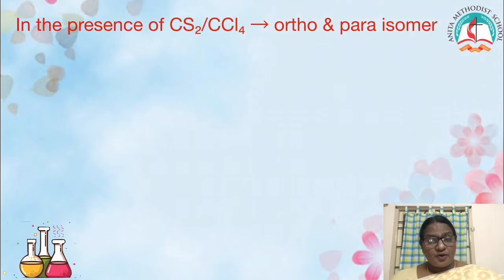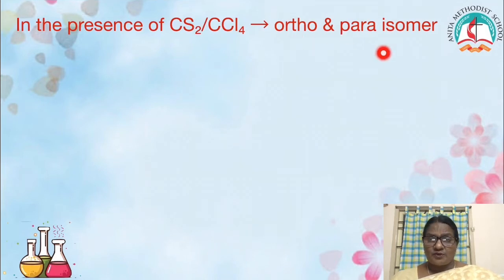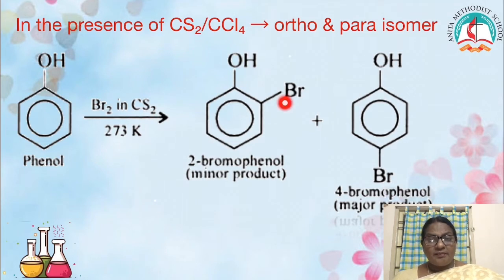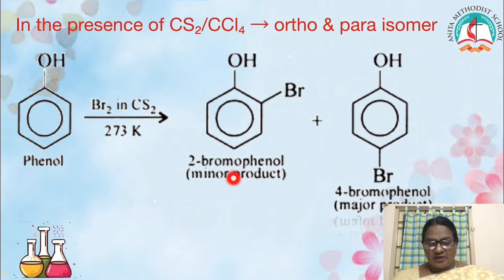Phenol undergoes bromination in the presence of carbon disulfide or carbon tetrachloride to form only the ortho isomer or the para isomer — all three places are not substituted. Phenol reacts with bromine in the presence of carbon disulfide; only the ortho or the para position is substituted, giving ortho-bromophenol (2-bromophenol) or para-bromophenol (4-bromophenol). Para-bromophenol is the major product.